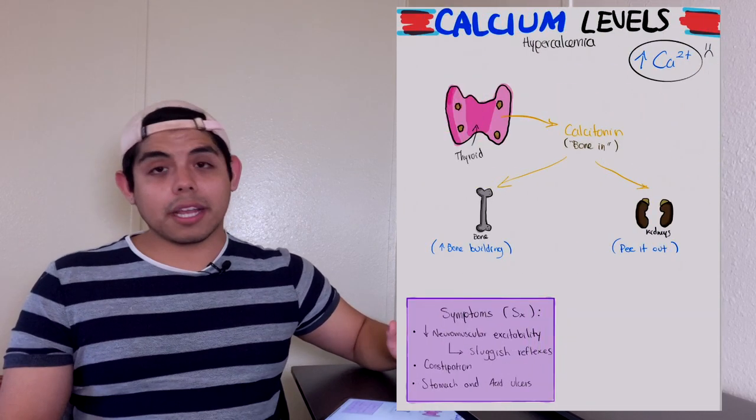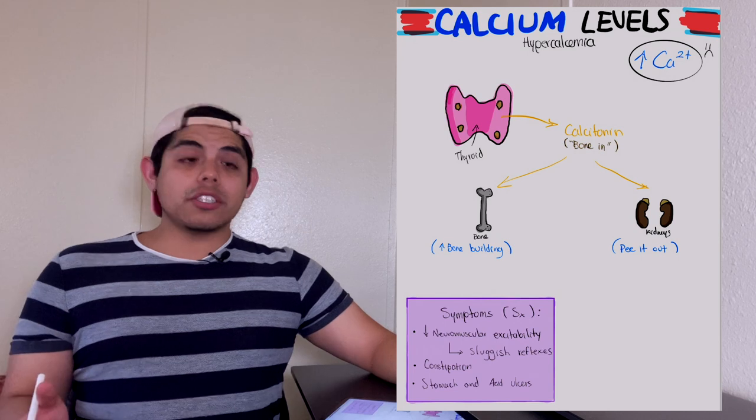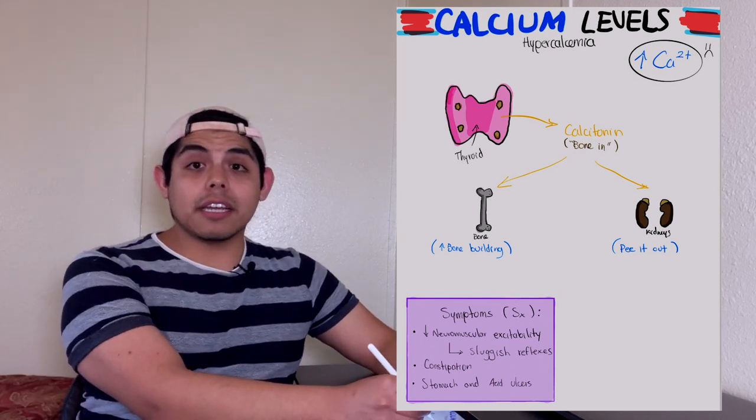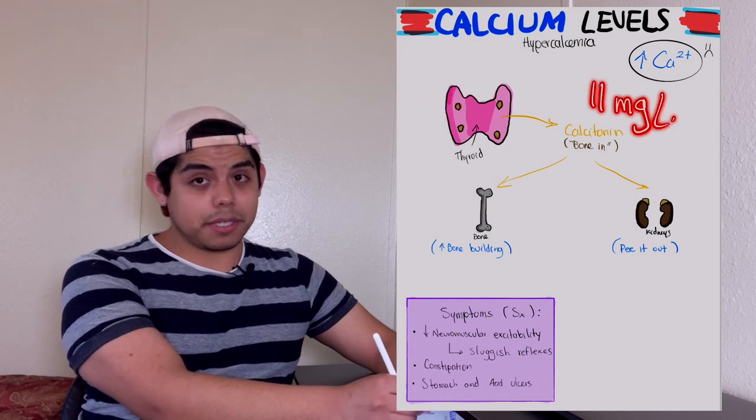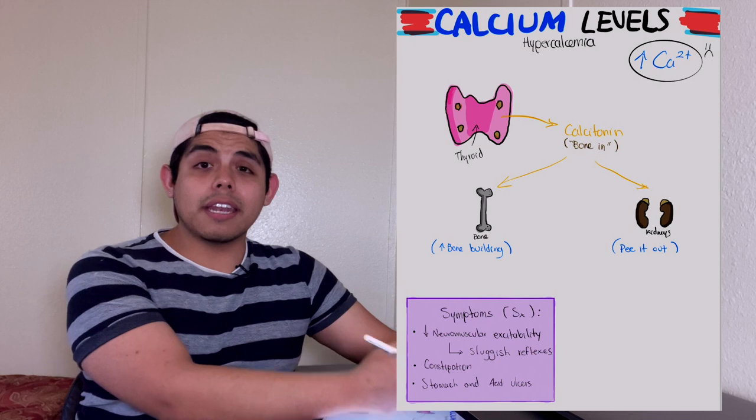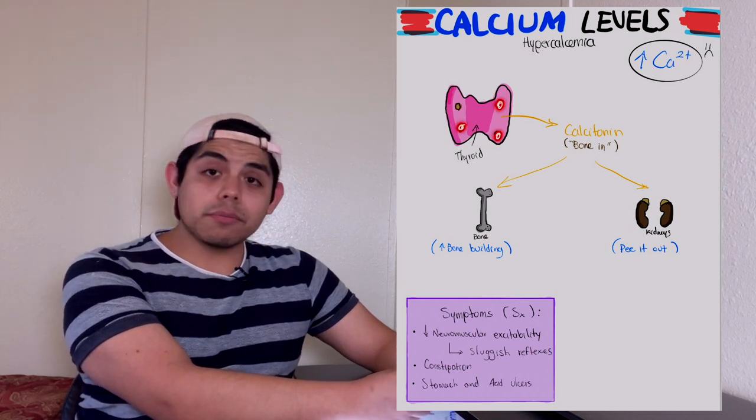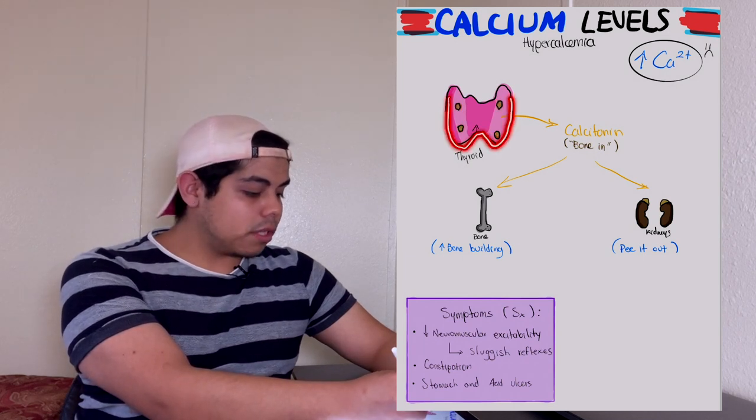Now let's go to hypercalcemia. Hypercalcemia means too much calcium in the blood, that means the blood will have more than 11 milligrams per deciliter of calcium. Now instead of using the parathyroid glands to bring the calcium to normal levels, it's the thyroid that will release a hormone.